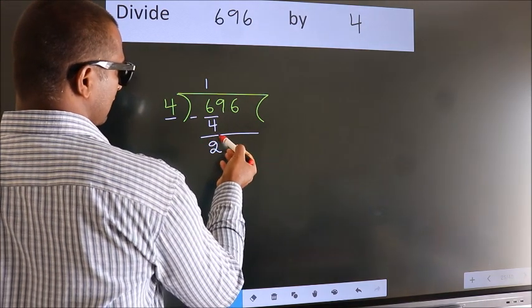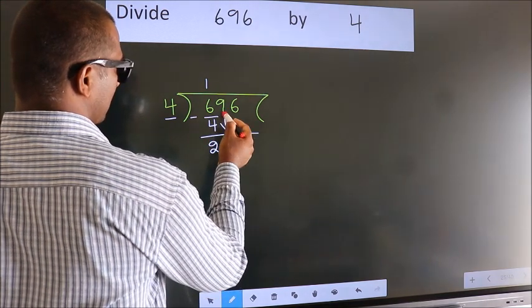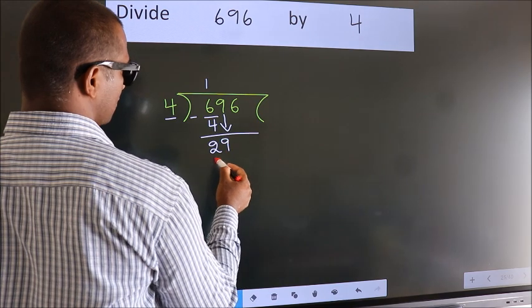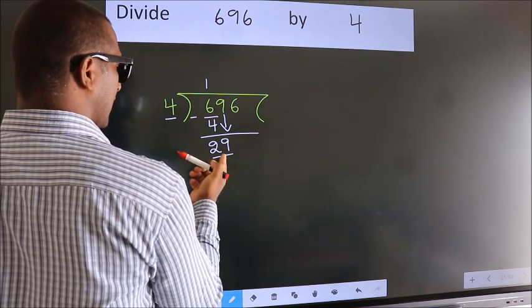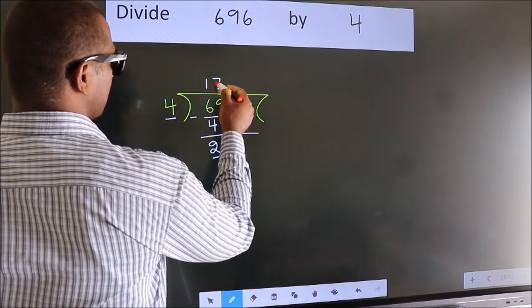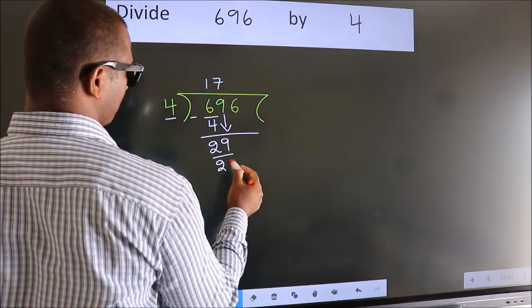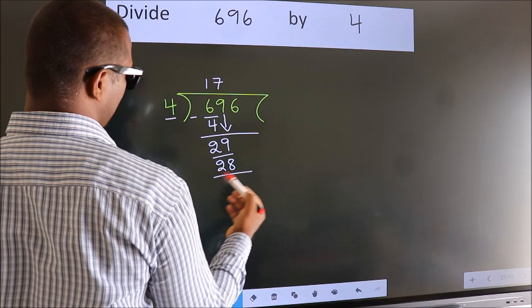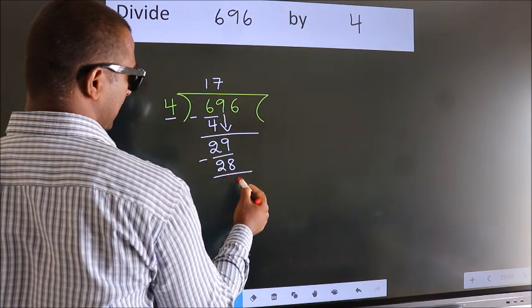After this, bring down the beside number. So, 9 down. So, 29. A number close to 29 in the 4 table is 4 times 7, 28. Now we subtract. We get 1.